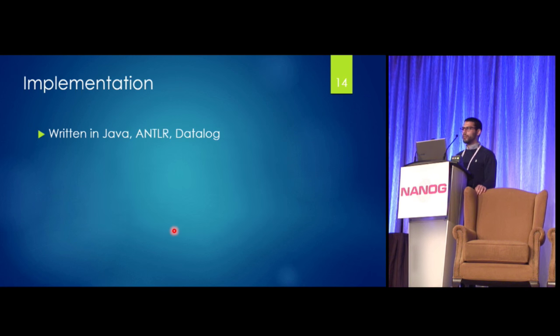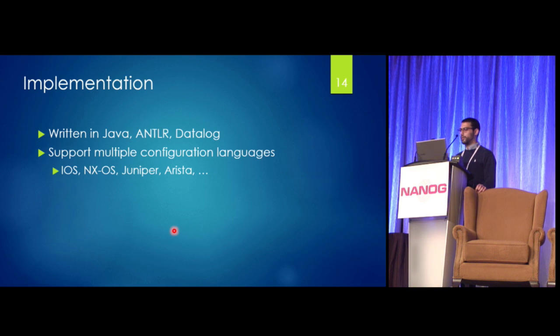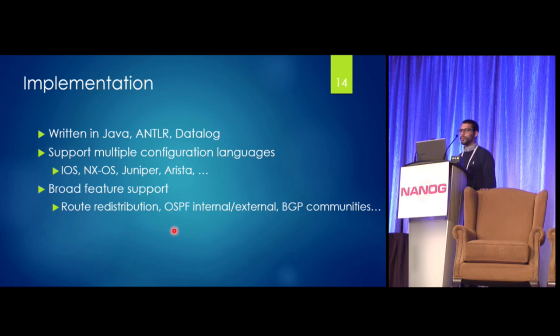So Batfish has been quite an undertaking. It's written in several programming languages, namely Java for most of the logic, ANTLR for the parsing, and Datalog for the forwarding table generation. And we also support many different routing languages. We support Cisco IOS, NXOS, Juniper, Arista, Quanta, and other similar router configuration languages. We support a wide variety of features including route redistribution, internal, external OSPF, BGP, communities, route maps, policy statements, etc.